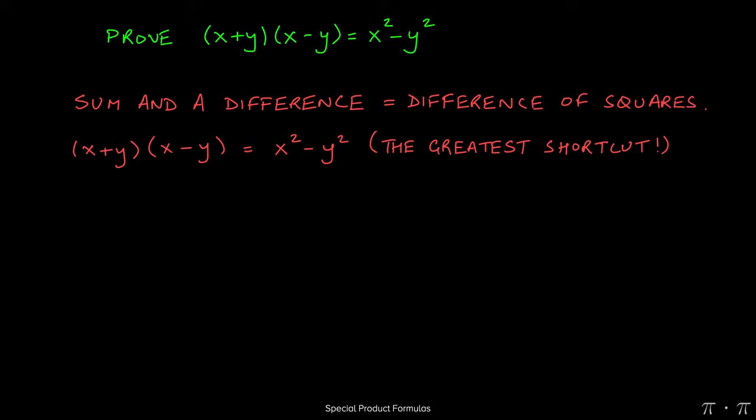Anytime you're trying to multiply two quantities where the algebraic terms are the same, you have an x here and another x here and a y here and another y here, but you have a sum and a difference.